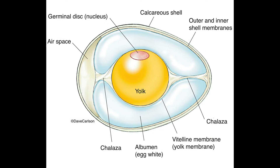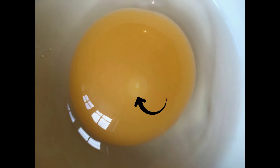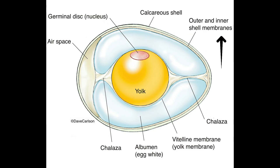There are two chalazae, one on the top and one on the bottom. The germinal disk is a small circular white spot on the surface of the yolk; its presence indicates that the egg is fertile.